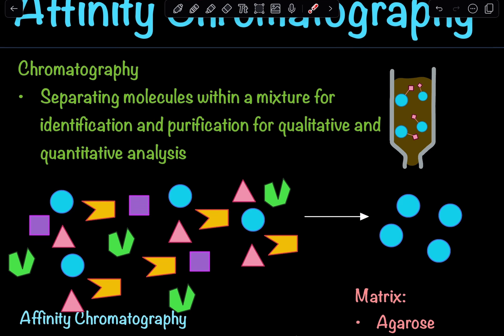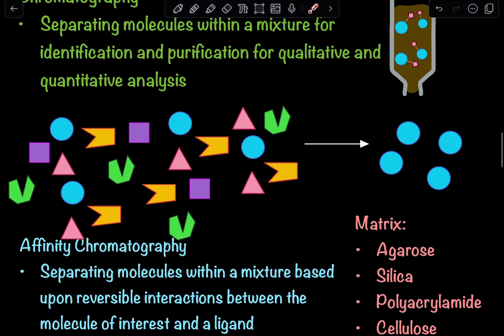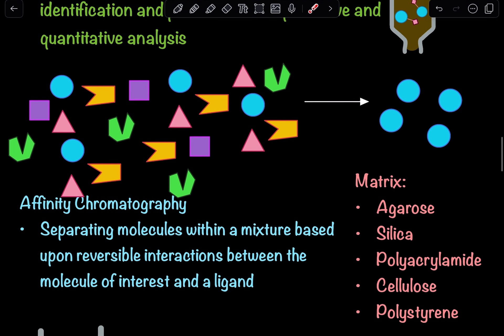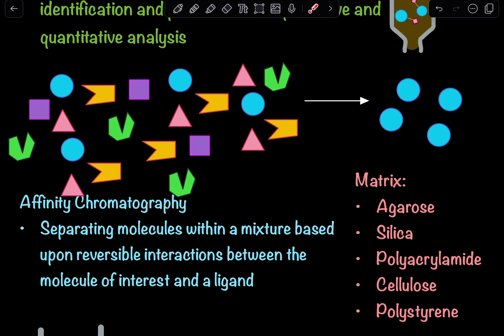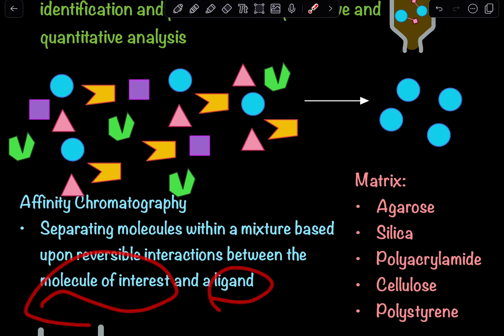There are different types of chromatography, but here we're going to understand affinity chromatography, which is essentially taking a mixture of molecules and separating a desired molecule of interest based on specific reversible interactions between the molecule of interest and a ligand. We know that within cells, there are molecules that specifically interact with another molecule — they form those interactions, such as enzyme-substrate interactions, that are very specific.